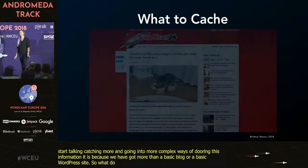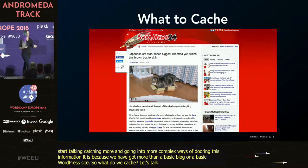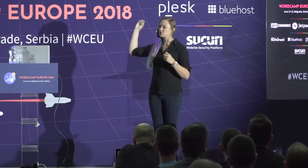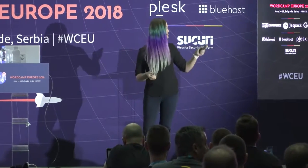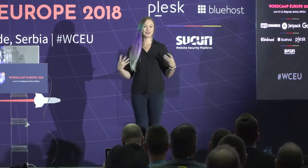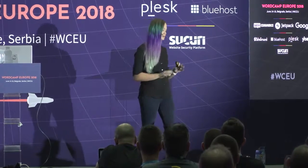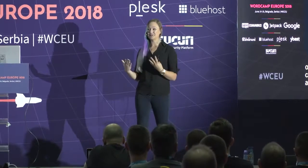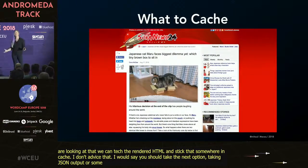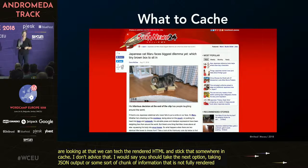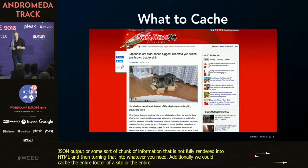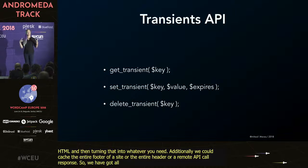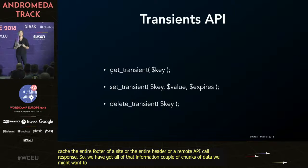So what do we cache? There are a couple of different things you can store when looking at a basic WordPress or blog site. One obvious thing: if we take our concept of full page caching, we can take a piece of the page — say, a sidebar widget with popular posts. We could take the rendered HTML and stick that somewhere in cache. I generally would say you should take JSON output or some sort of chunk of information that's not fully rendered into HTML. Additionally, we could cache the entire footer, the entire header, or a remote API call response.